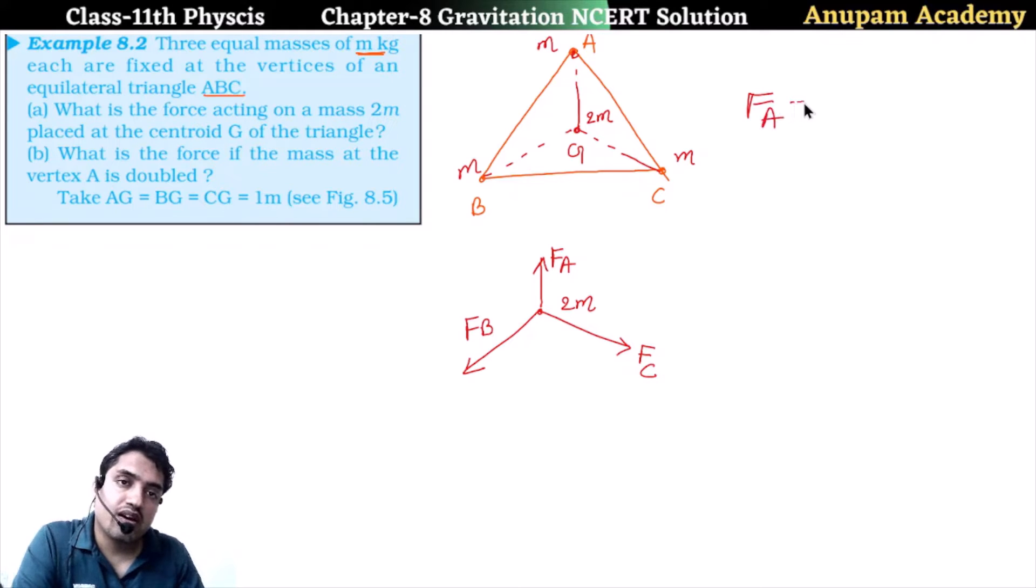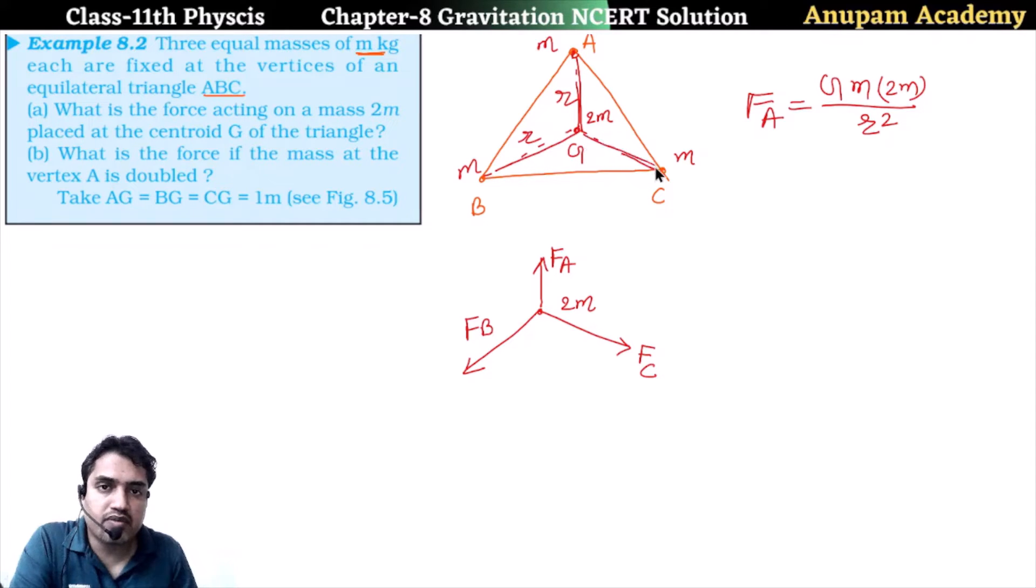Because force due to A is Gm into 2m divided by distance R squared. This distance is R, it is also R. Distance is R. So this F_A is equal to 2Gm² divided by R². And it is equal to force due to B and also equal to force due to C. Three forces equal.